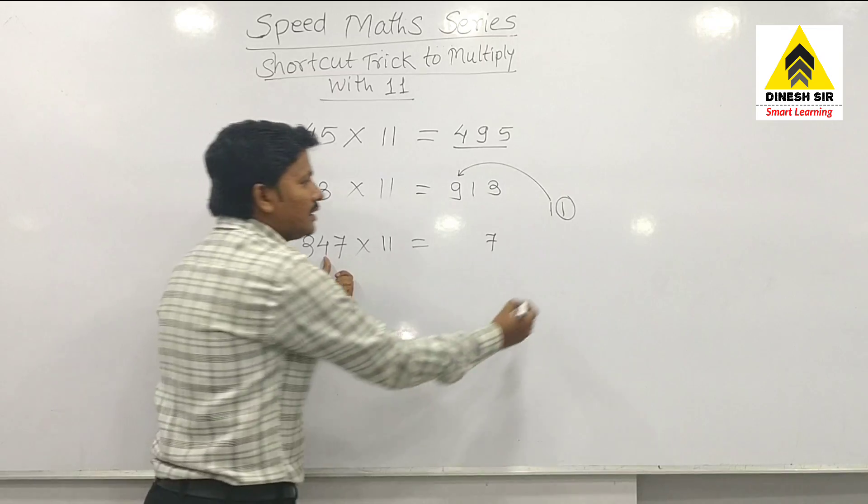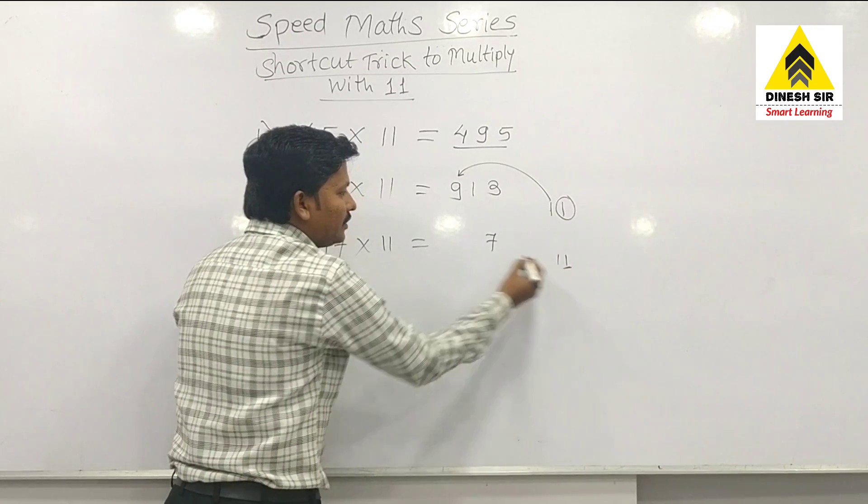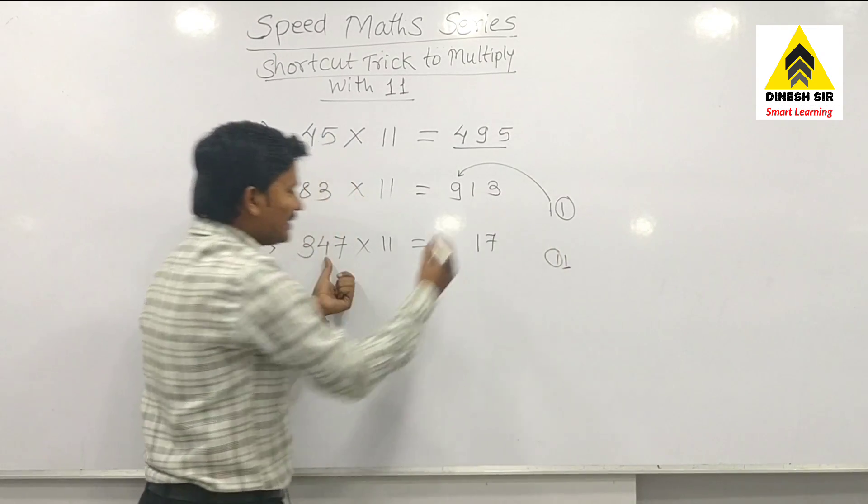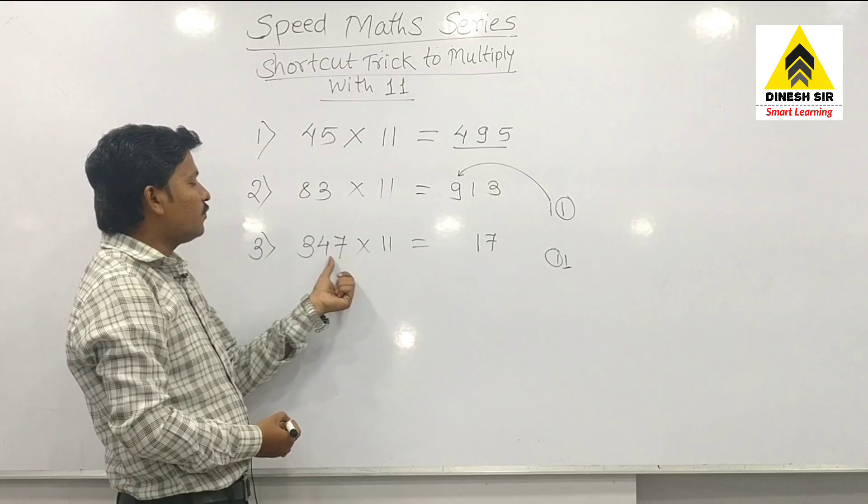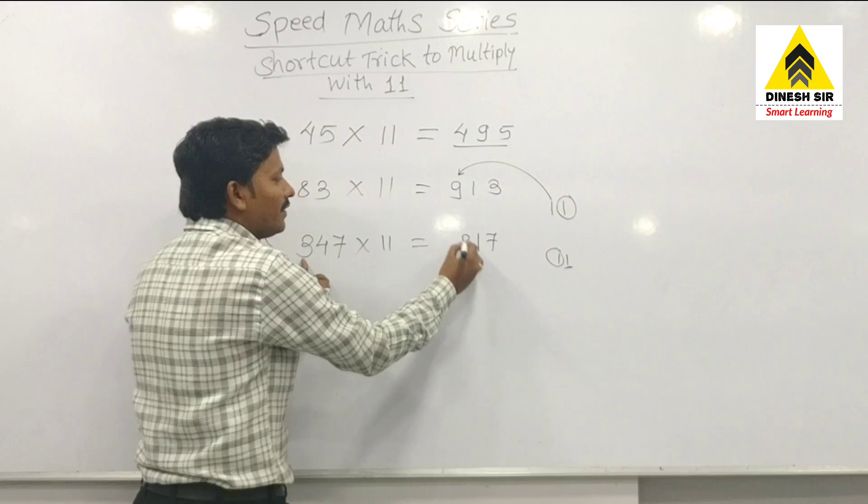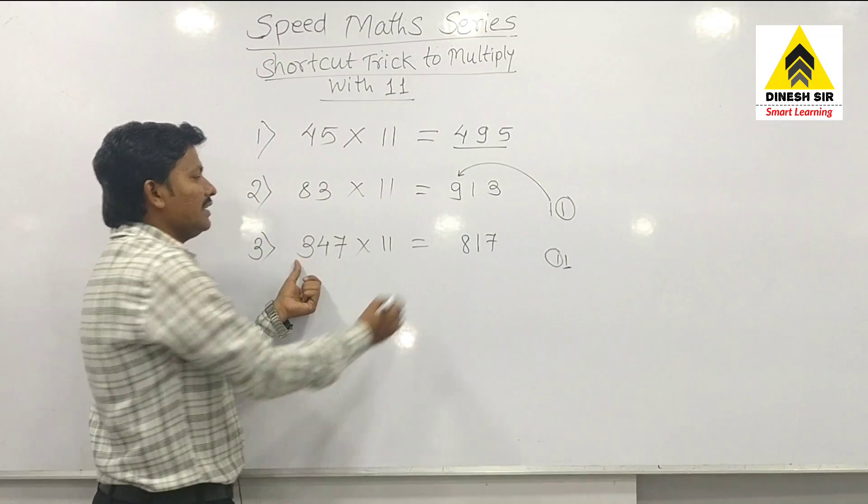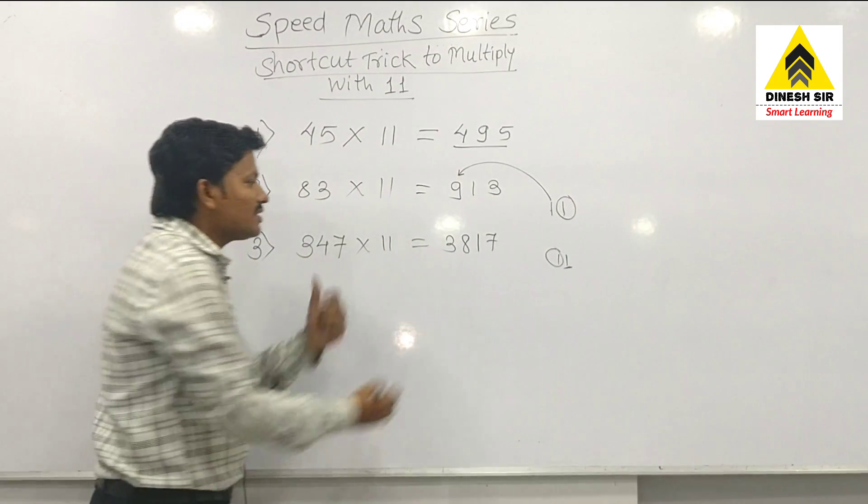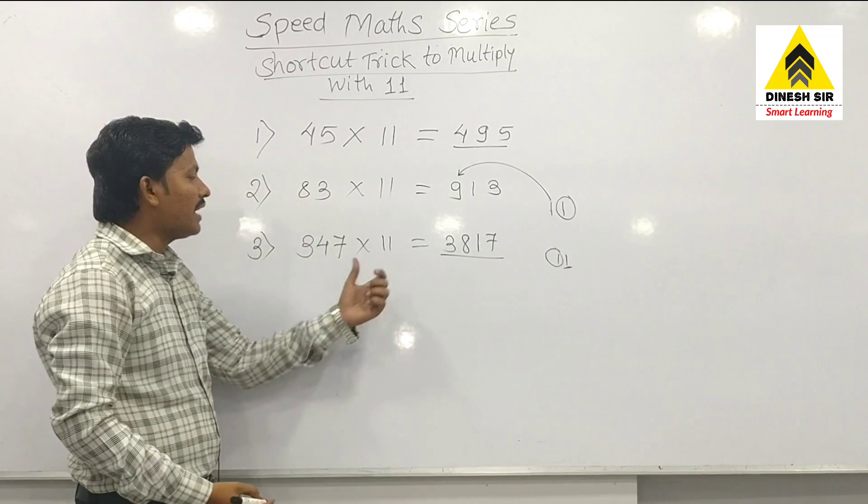Now same, 11 here. So this is the answer for multiplying 347 with 11.